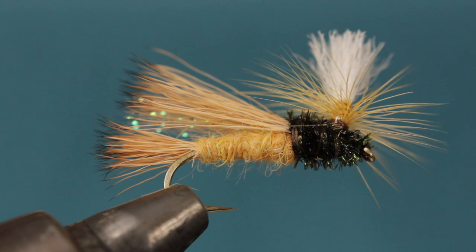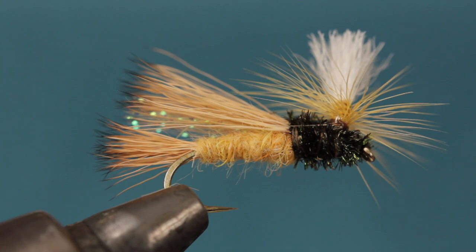Tied in different colors and sizes, the Bugmeister can be used to represent a whole slew of insect species. Or just think of it as a non-specific attractor pattern. Either way, it's a fish catcher.